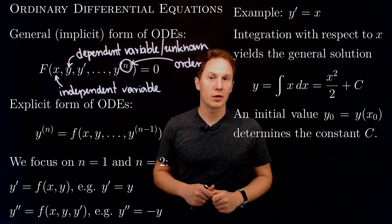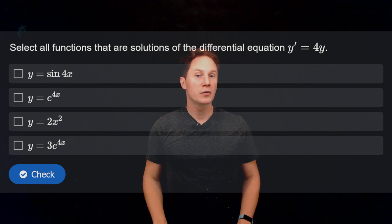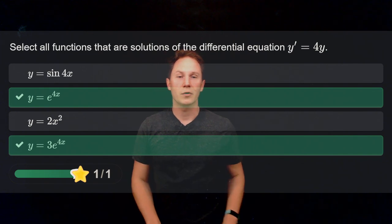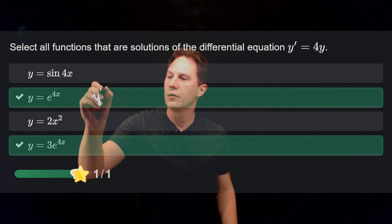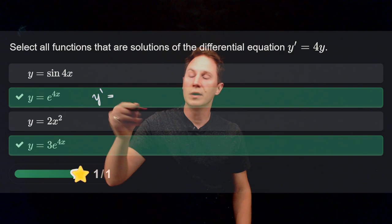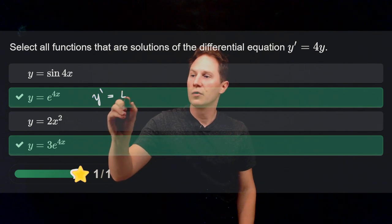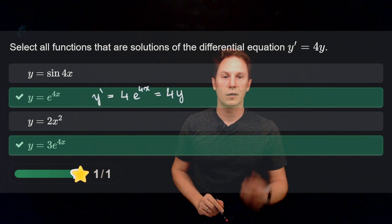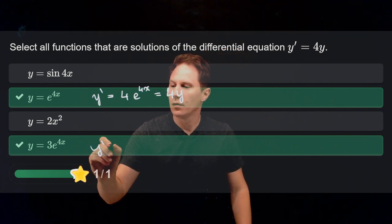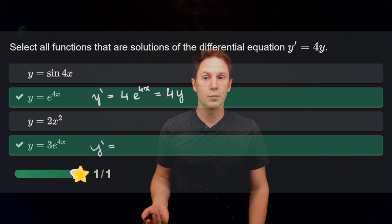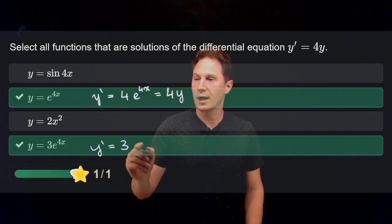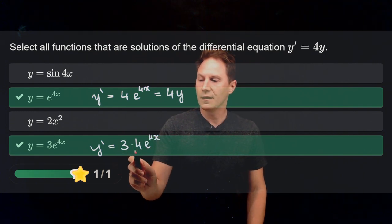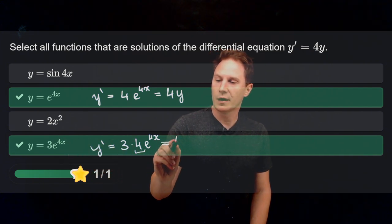Select all functions that are solutions of the differential equation y prime equals 4y. For the first function, e to the 4x differentiates to e to the 4x times the derivative of 4x, which is 4, so it's 4 times e to the 4x — that is indeed 4 times y, so it is a solution. For y equals 3 times e to the 4x, by the constant multiple rule we get 3 times the derivative of e to the 4x, which is 4 times e to the 4x, giving us 4 times 3 times e to the 4x — that's 4 times y. So both are solutions.